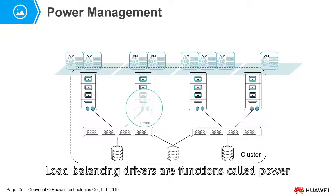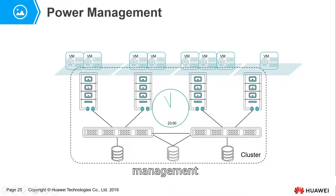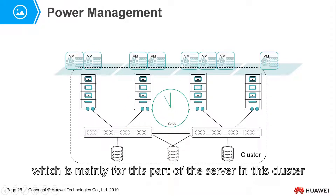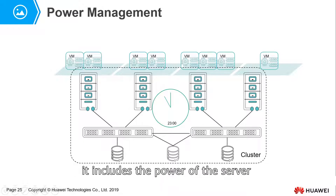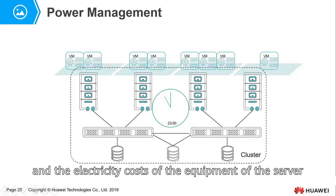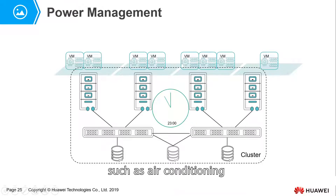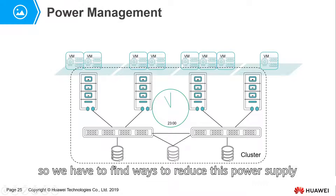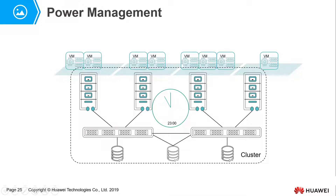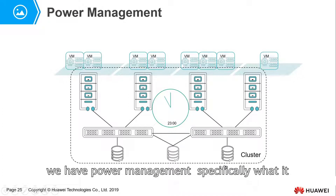Load balancing includes a function called power management, which is mainly for the servers in the cluster. In the data center, electricity bills are also a big expense — including the power of the servers and the electricity cost of supporting equipment such as air conditioning. Now, with attention to green energy saving, we need to find ways to reduce power consumption. For this purpose, we have power management.